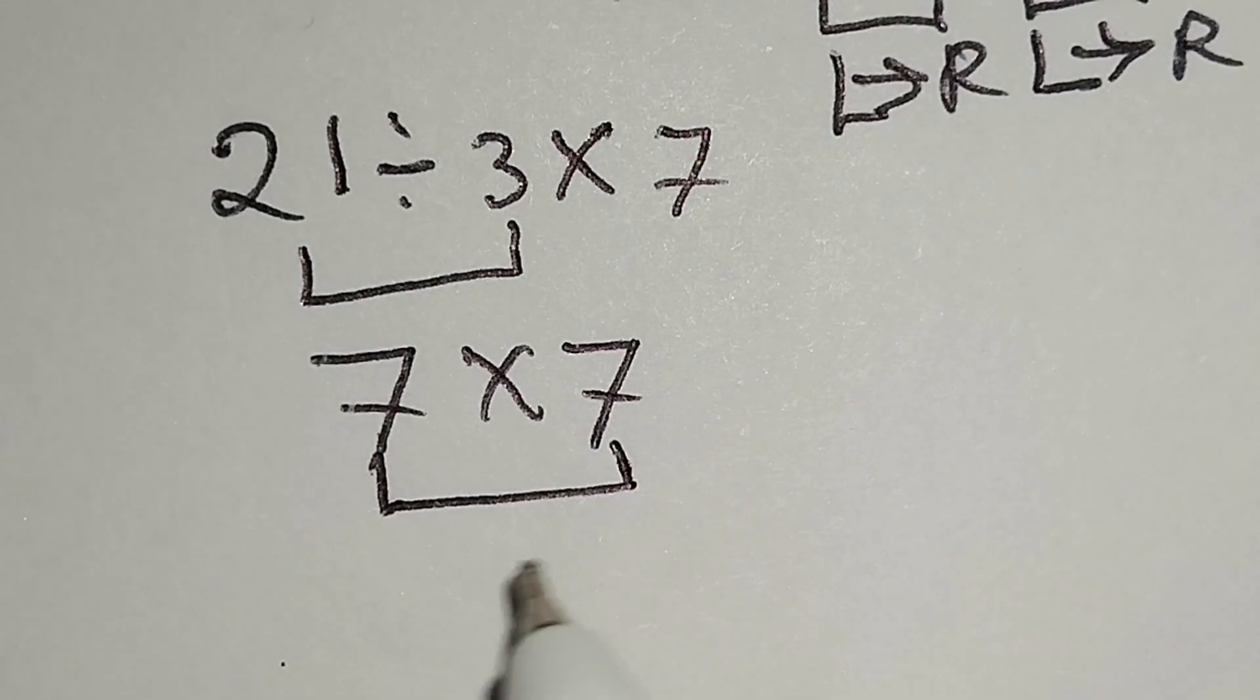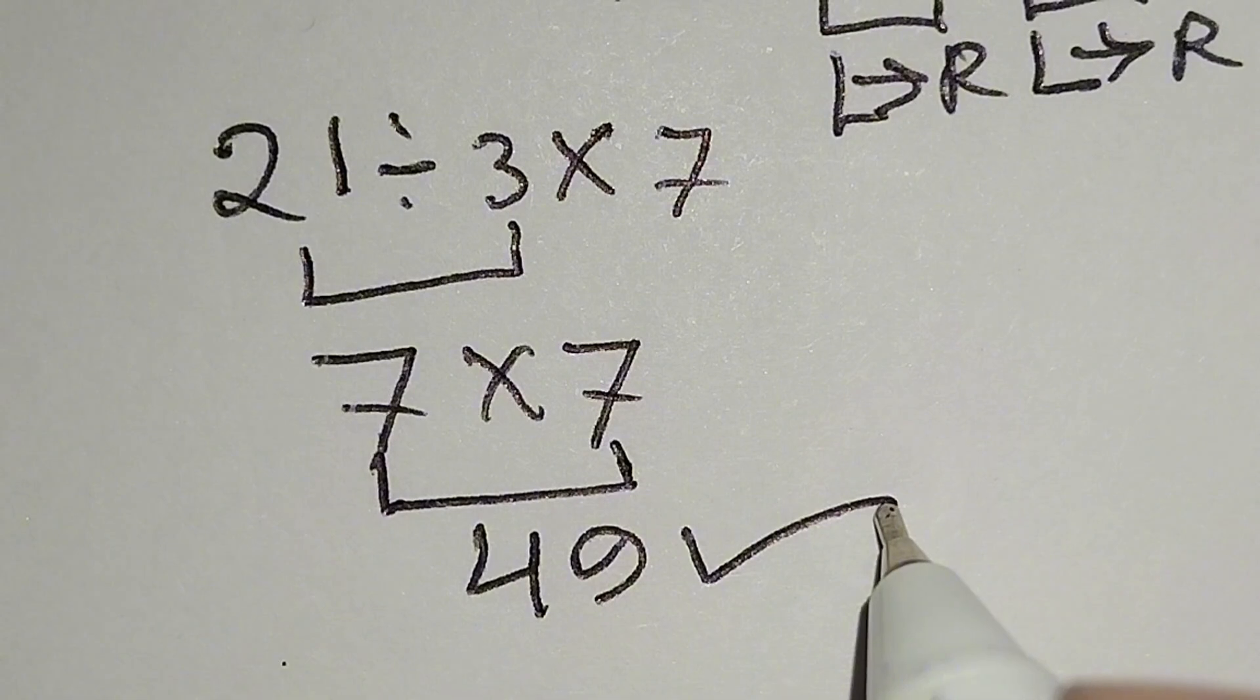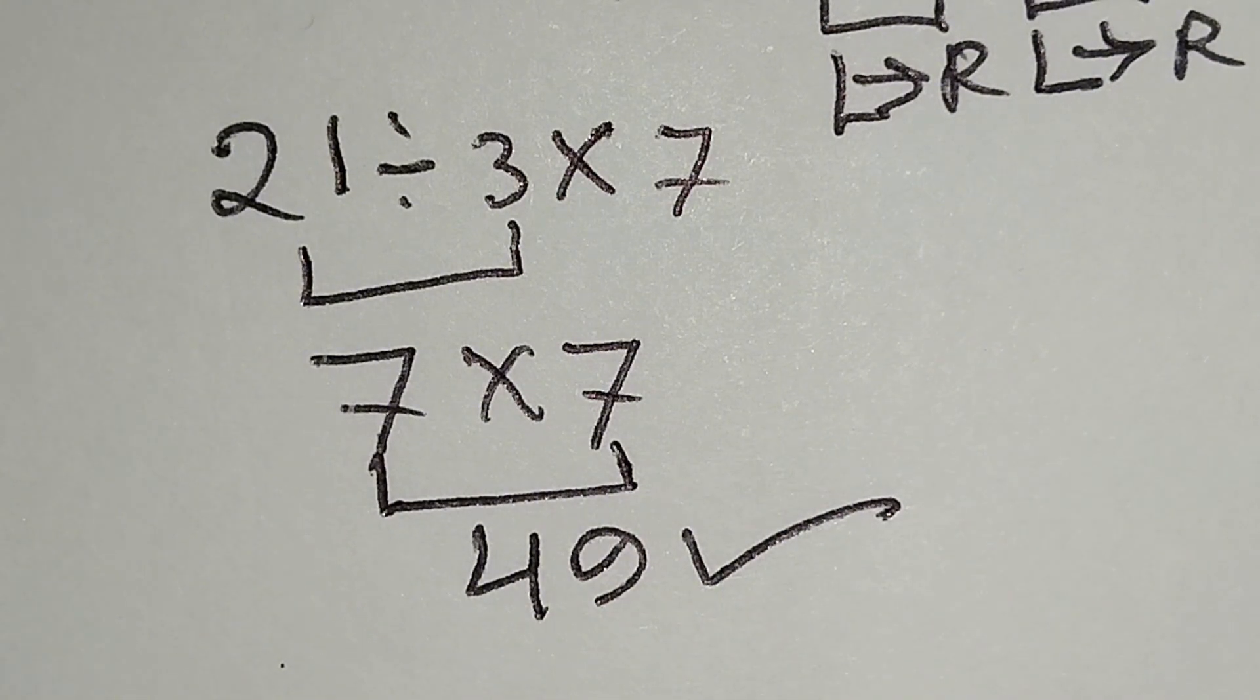7 multiply 7 gives us 49, and this is the correct answer. Thanks for watching the video, please like, comment, share, and subscribe.